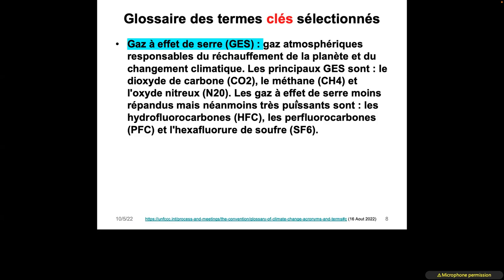The main greenhouse gases found in the atmosphere for natural or anthropogenic reasons are carbon dioxide, methane, and nitrous oxide. There are also rare gases with very powerful warming effects, in particular hydrofluorocarbons (HFCs) and perfluorocarbons (PFCs).